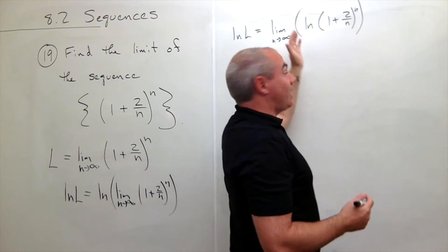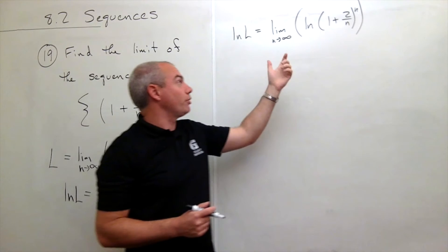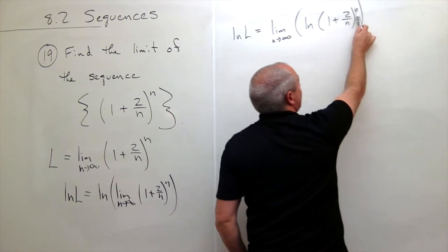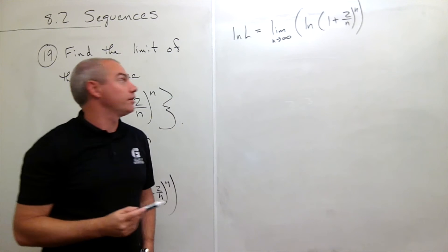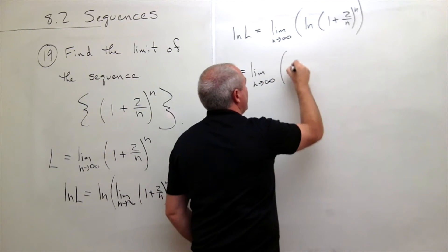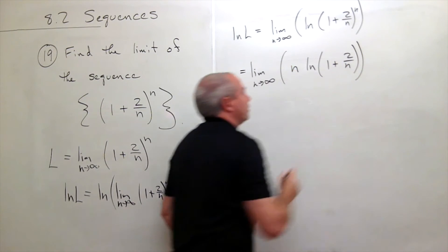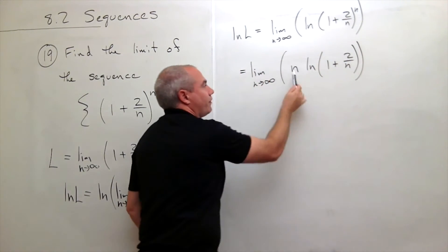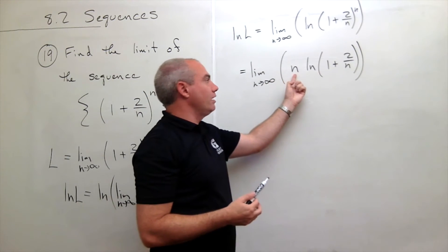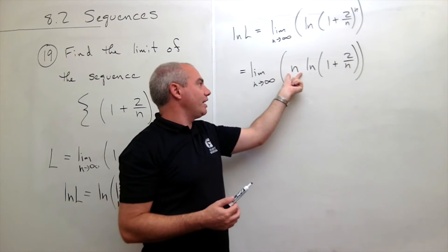The reason I did this in the first place is because I really don't like this n sitting up in the exponent. A great way to take things out of an exponent is to use the properties of log. So I'm going to take this n and pull it out in front of my natural log. That gives me the limit as n goes to infinity of n times ln of 1 plus 2 over n. Now if I plug in n goes to infinity, I have infinity times ln of 1, and ln of 1 is 0 — so I have infinity times 0.